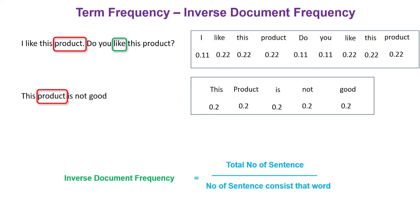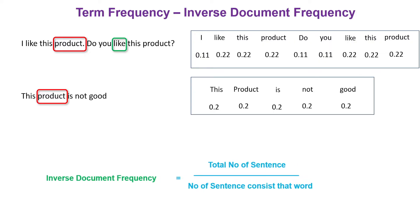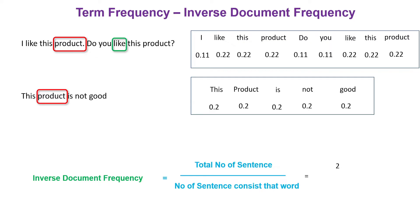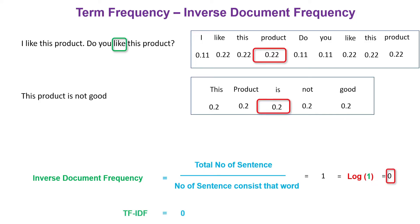The IDF formula is: total number of sentences divided by number of sentences which contain that particular word. For the word 'product', the total number of sentences is 2 and the number of sentences containing 'product' is also 2, so the answer is 1. This is where the magic happens — if we take log of 1, it will always be 0. So the IDF score for 'product' is 0, and if you multiply term frequency with inverse document frequency, the TF-IDF score will be 0 for the word 'product'. This is how TF-IDF works.